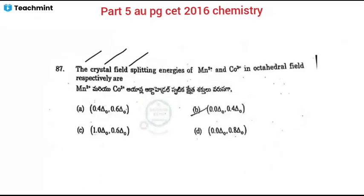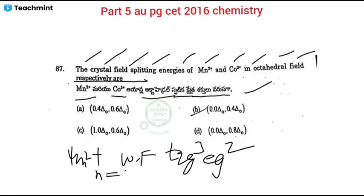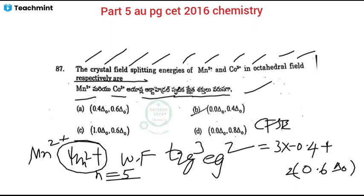Next: crystal field stabilization energy (CFSE) of Mn²⁺ and Co³⁺ in octahedral field. For Mn²⁺, it is a d⁵ weak field case with configuration t₂g³ eg². The CFSE = 3×(−0.4) + 2×(+0.6) Δ₀ = −1.2 + 1.2 = 0 Δ₀. So for Mn²⁺ weak field, CFSE = 0.